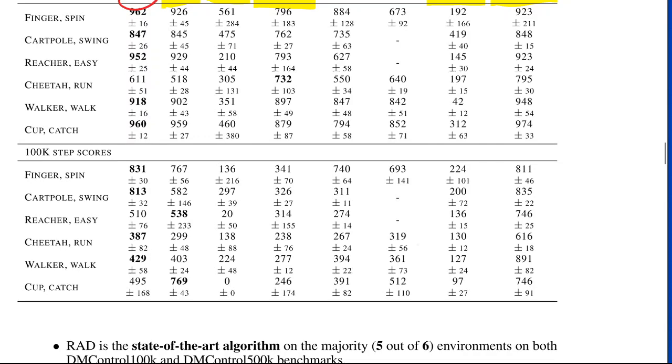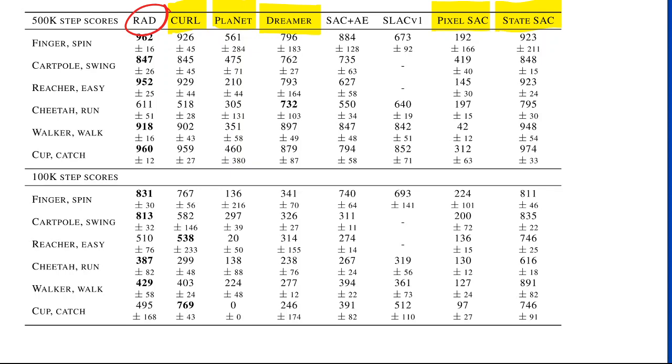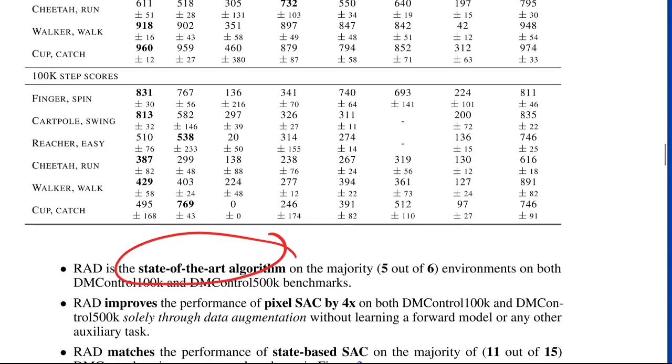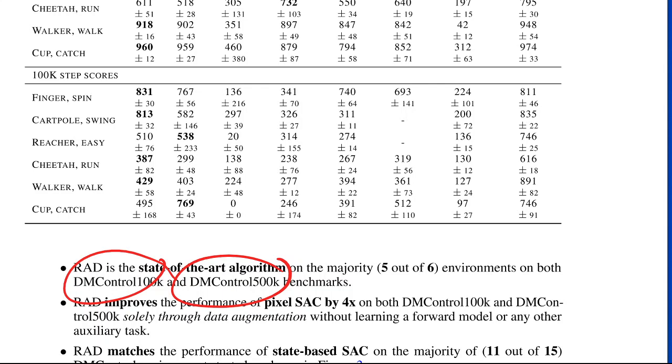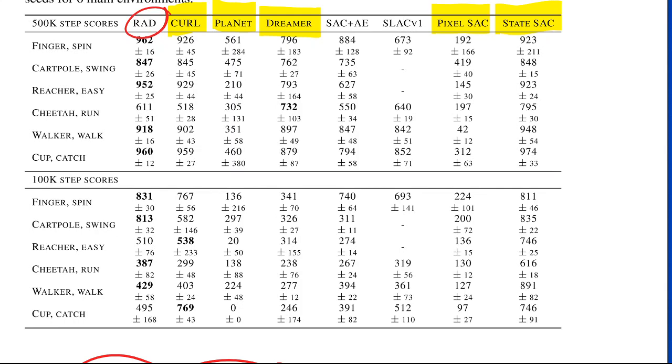They never investigate, they simply say, wow, this reaches the same performance or outperforms these other methods. It's important to note here that this is on the DM control 100k and 500k benchmarks, which means that there's a limit on the number of frames from these control tasks that you get. So you either get 100k or you get 500k frames. So the difficulty is learning from limited data. It's not state of the art reinforcement learning method overall, it is the state of the art on this particular task on learning from limited data.